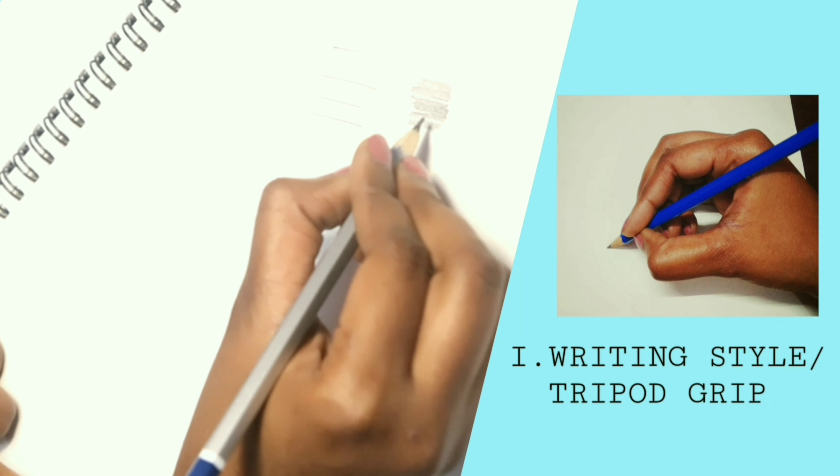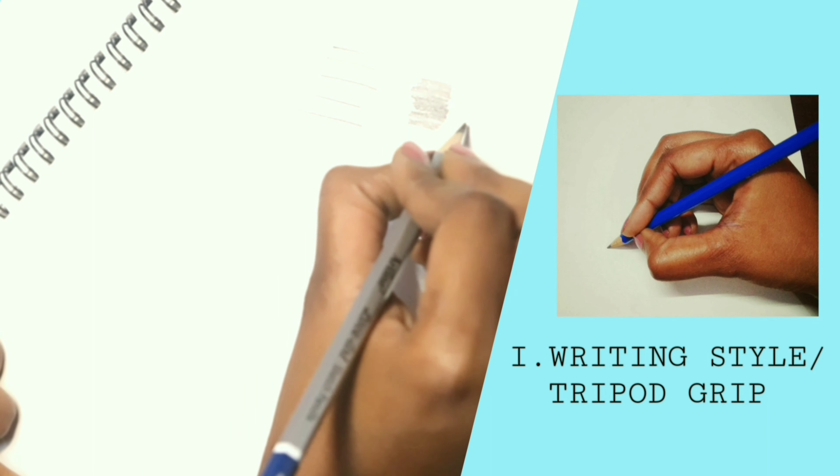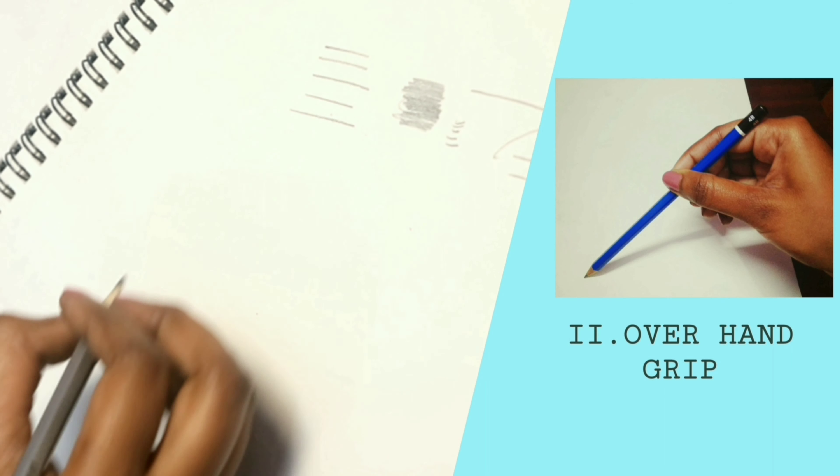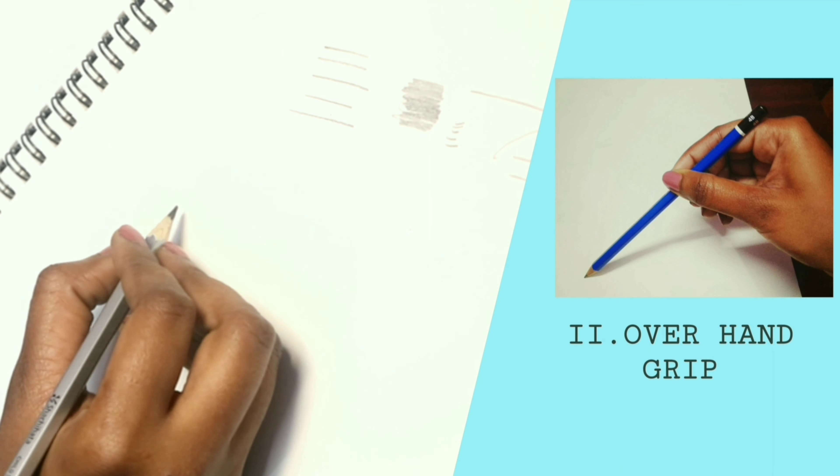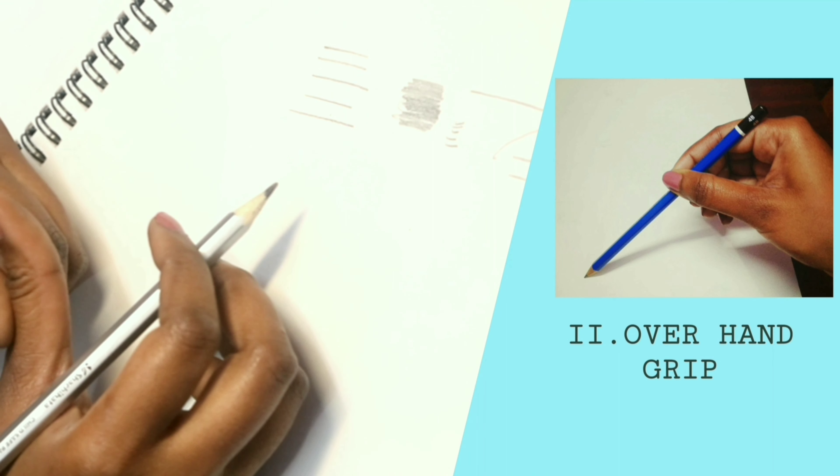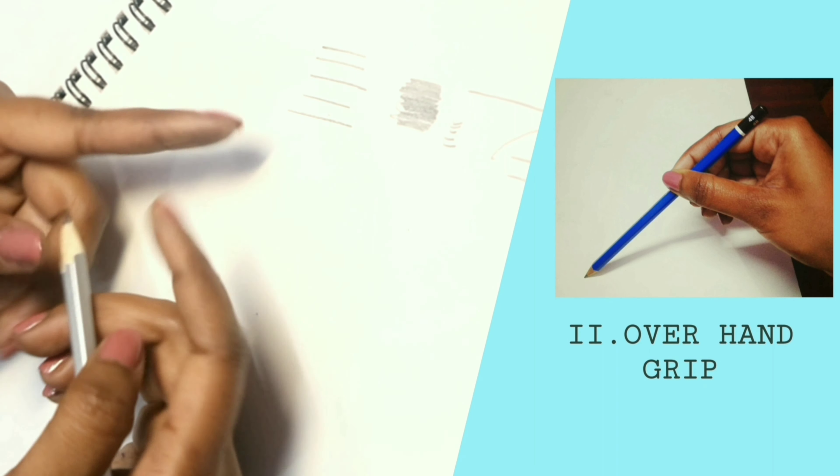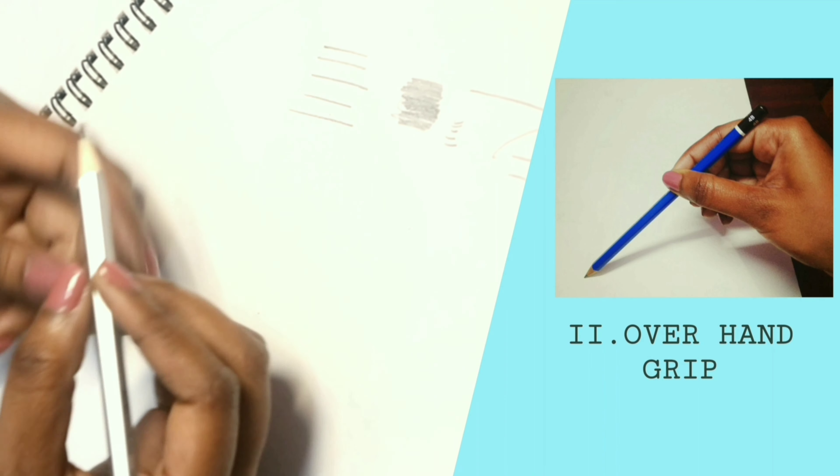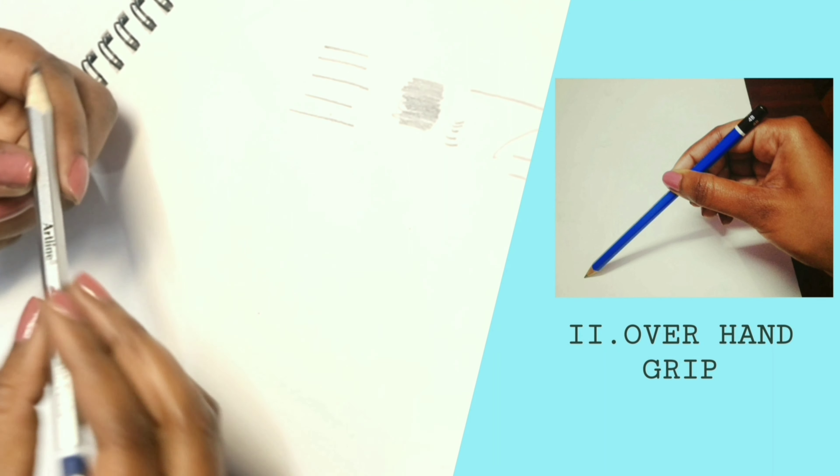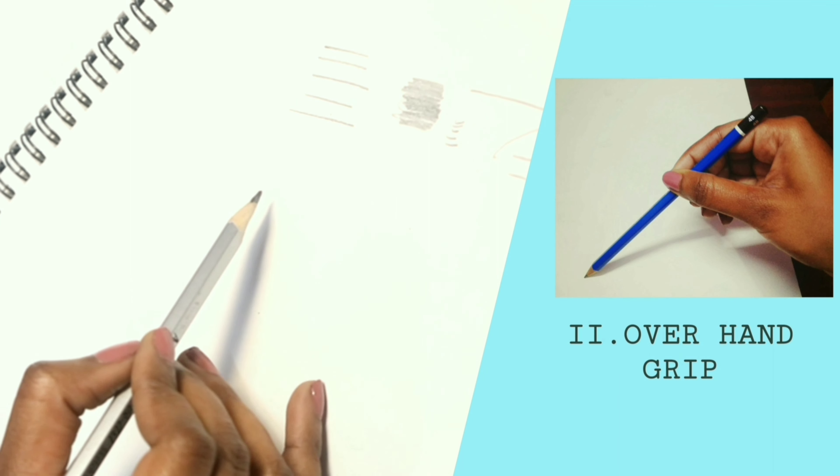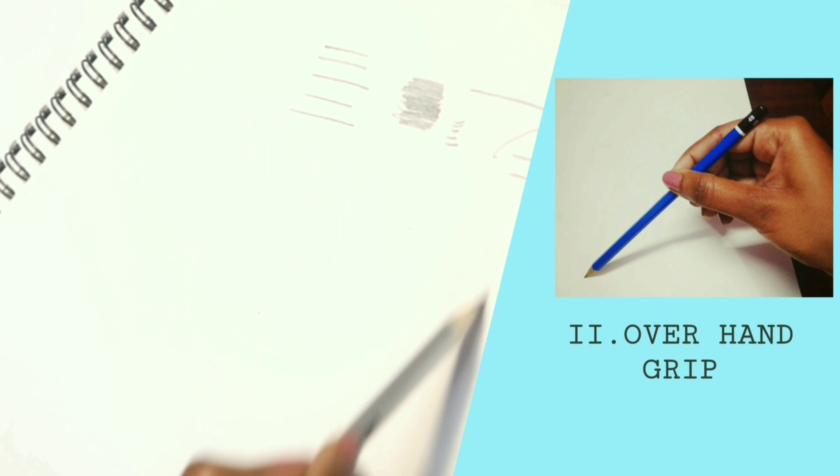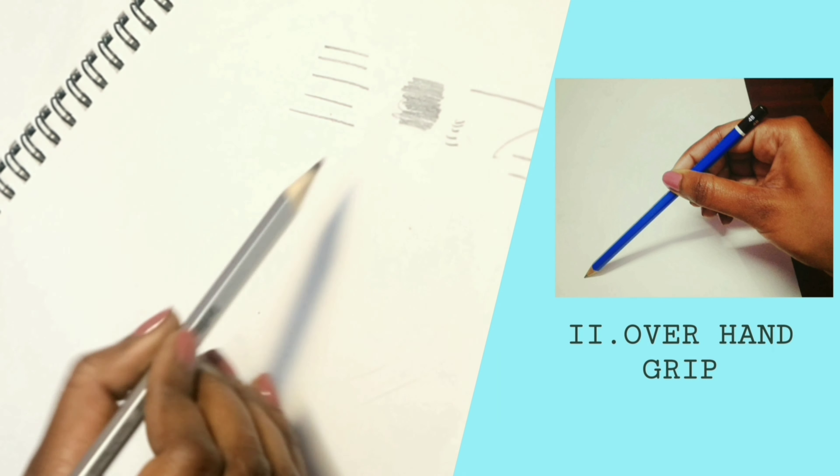Moving on to the next style, that is the overhand grip. Here the pencil is held between the thumb and the index finger without the support of the middle finger, and our wrist doesn't rest on the paper. It allows the free movement of the hand. Here you can use the movement of the shoulder too. It helps while working on a larger project.